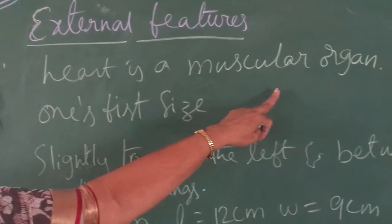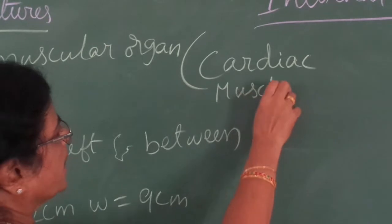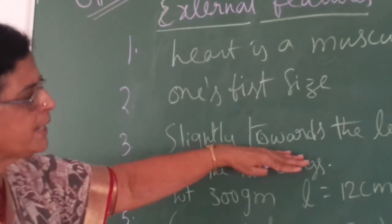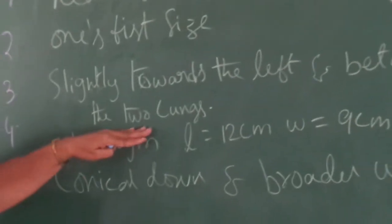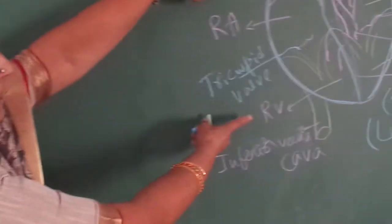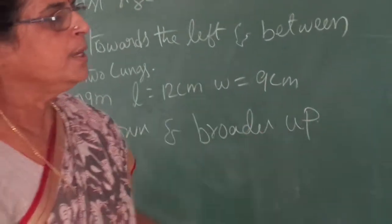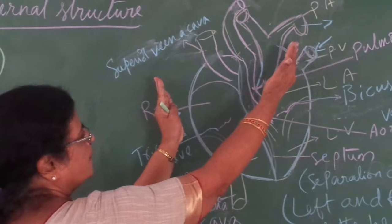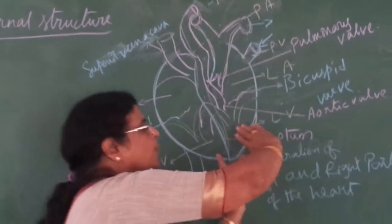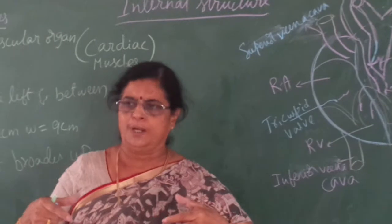The heart is a muscular organ. Heart muscles are known as cardiac muscles. It is one's fist size, and slightly twisted towards the left, located between the two lungs. Its weight is approximately 300 grams, length is 12 centimeters, and width is 9 centimeters. It is conical down and broader up. The heart is slightly twisted — two-thirds towards the left side — and located between the two lungs, left and right.